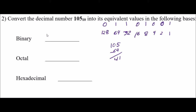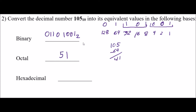So my binary number is 0, 1, 1, 0, 1, 0, 1. Now I'm going to go to octal. I group them in terms of 3s: 1s place, 2s place, 4s place — that is a 1. Next group: 1s, 2s, 4s place — 4 plus 1 is a 5. And the last group: 1s, 2s, 4s place — I just have a 1 there. So my octal number is 151. That's base 8.